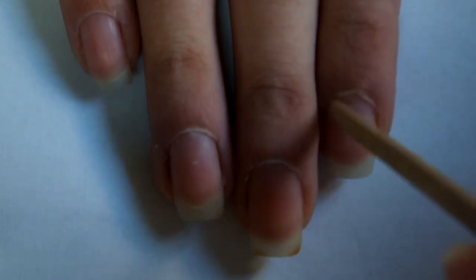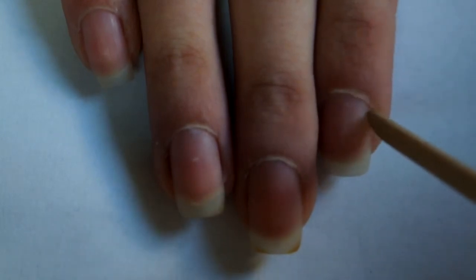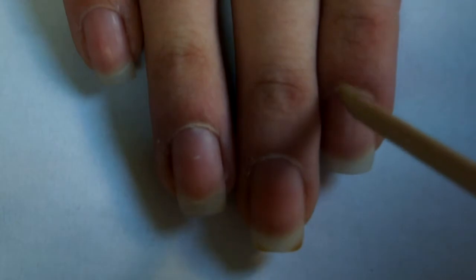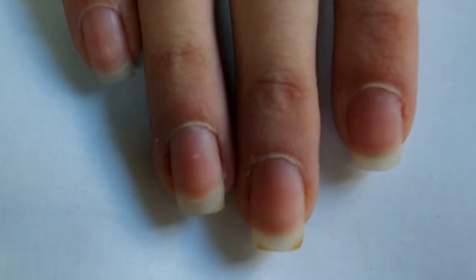After 10 minutes, remove your hand from the bowl and wipe off the excess water with a towel. With the orange stick, start pushing back your cuticles. If they hurt, you should place your hand back in the water and wait for another 5 or 10 minutes.